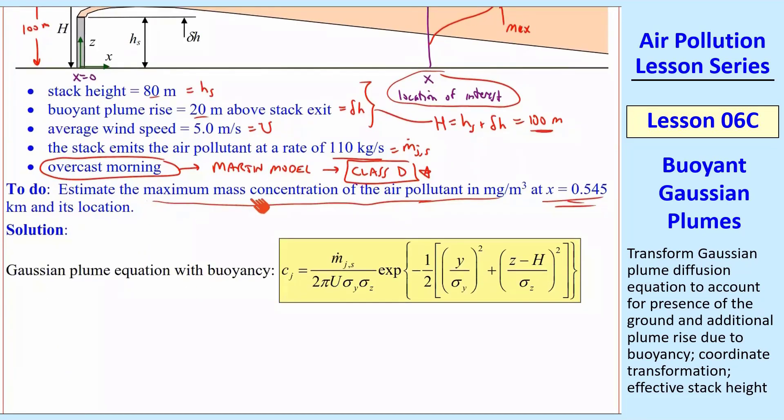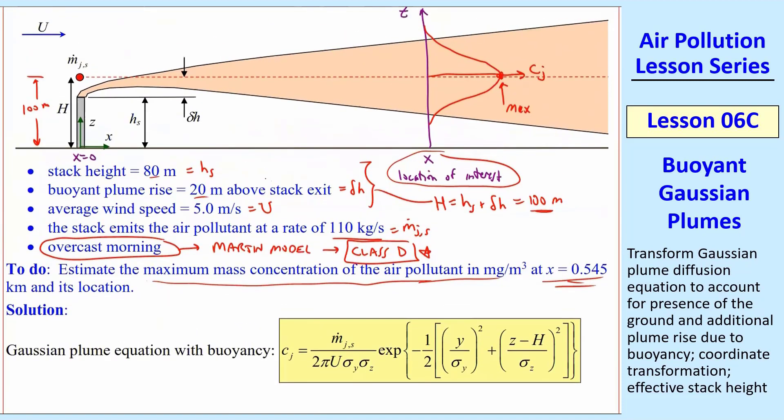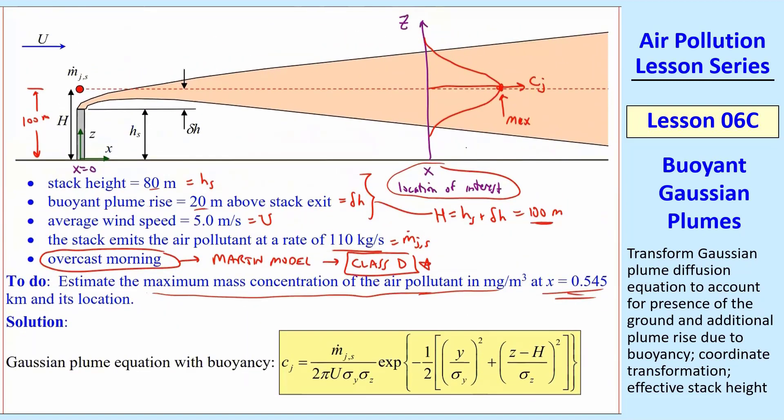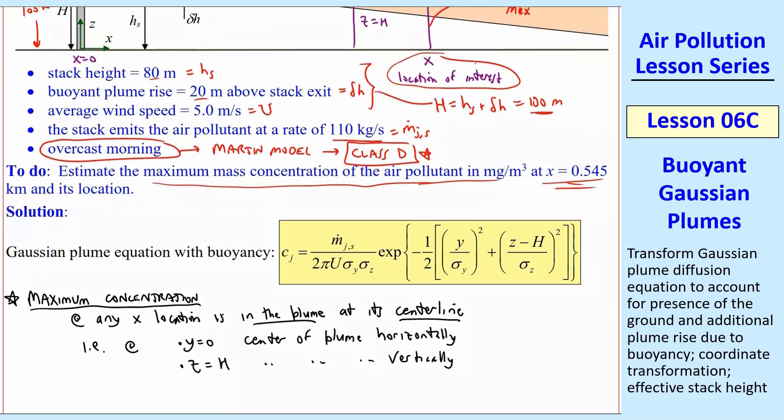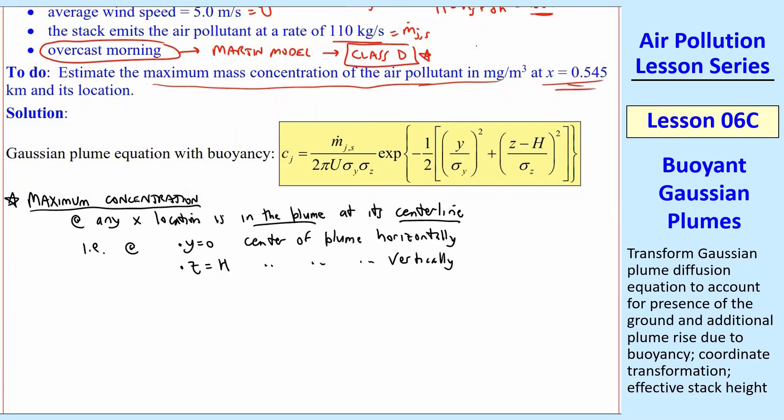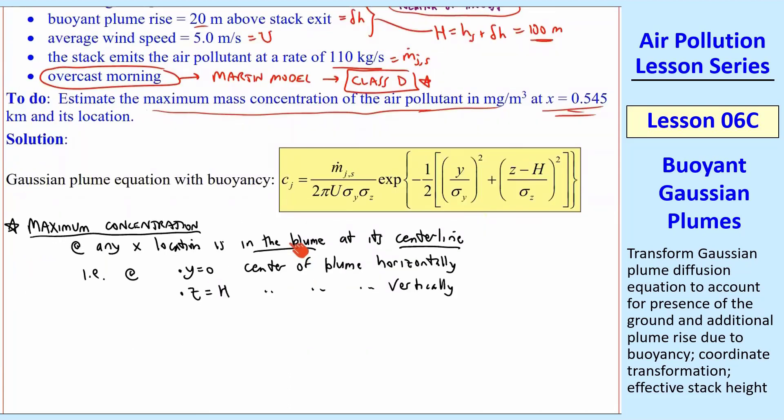So we can answer this question and it actually makes life easier. We say, where is the maximum mass concentration of the air pollutant? It is at the location where Y equals zero in the horizontal direction, center of the plume. And Z, where is the Z location of the center of the plume? And that would be at Z equal capital H at any x location that we're talking about. So the maximum concentration is in the plume. It's inside the plume at its center line, in fact. And where is the center line? It's at Y equals zero, center of the plume horizontally, and at Z equal H, which is the center of the plume vertically.